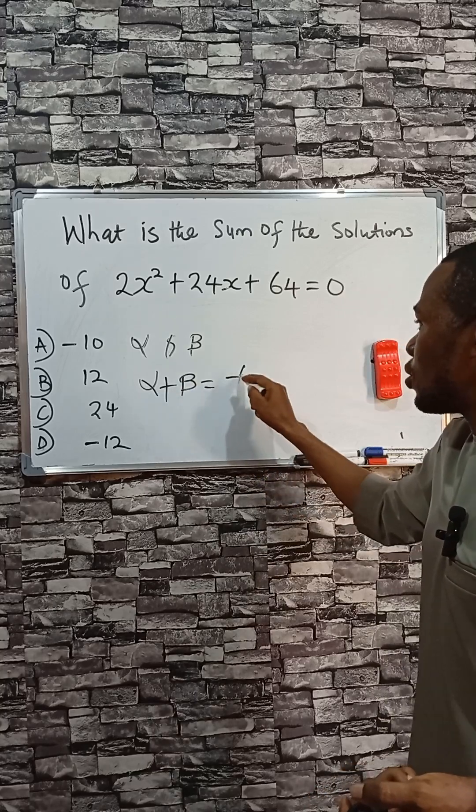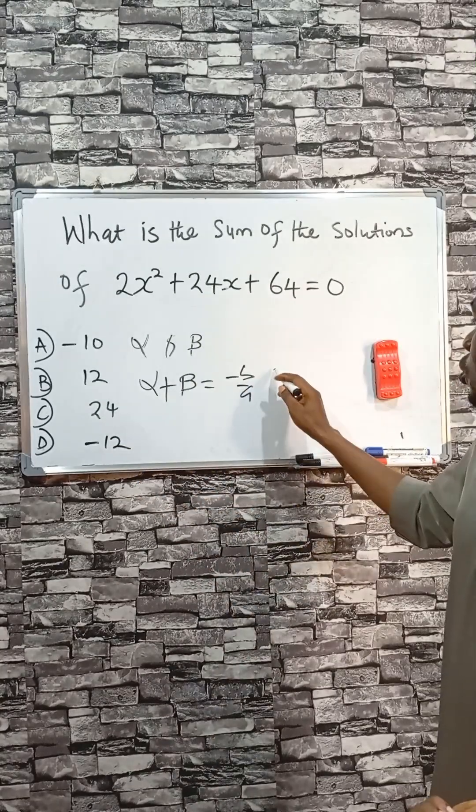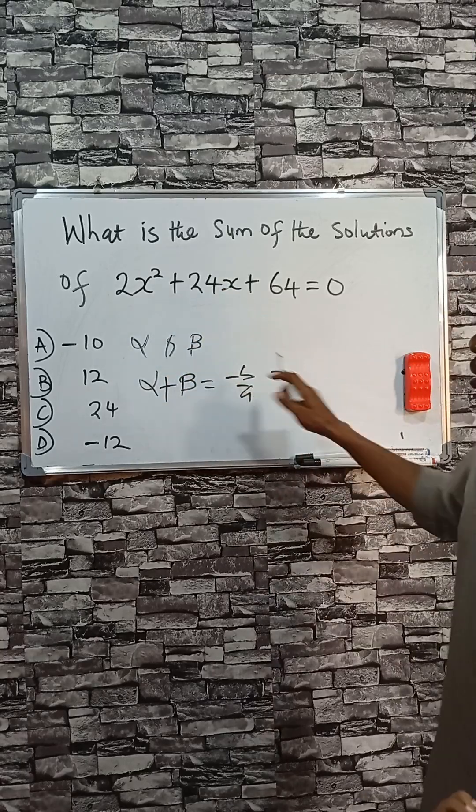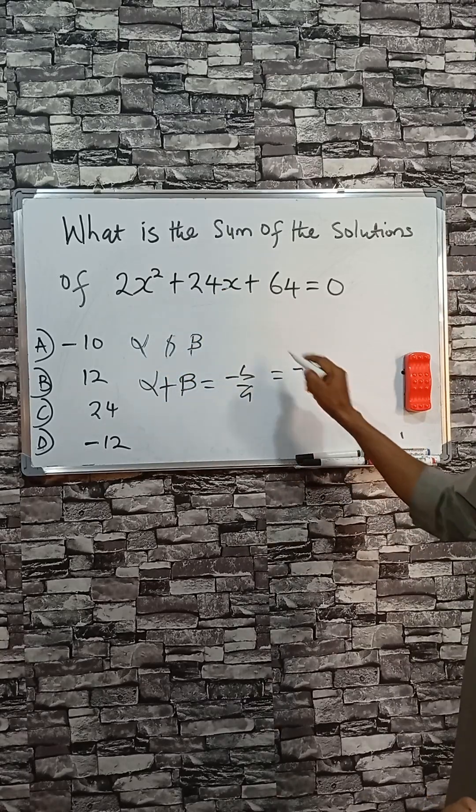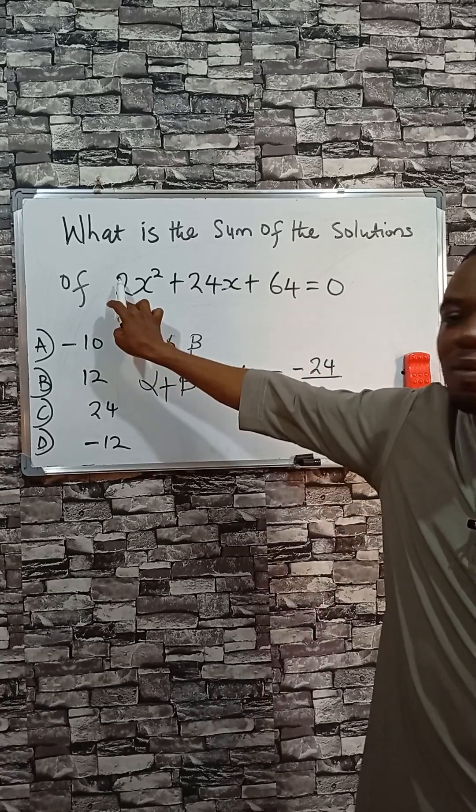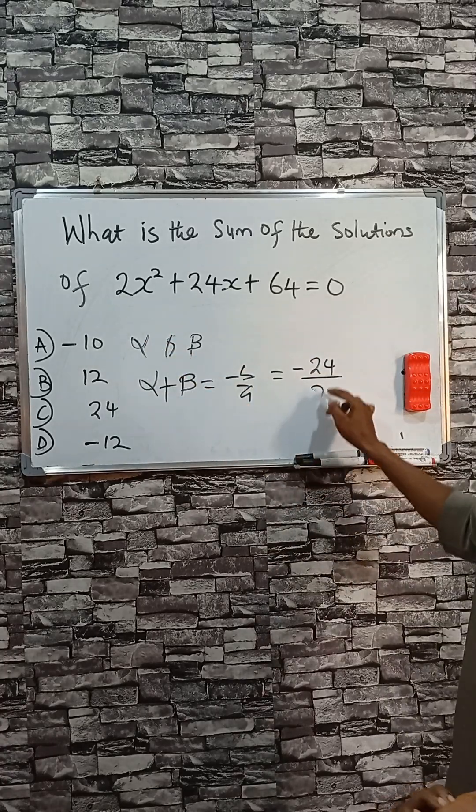It will give you minus b over a. That's been proven. So from here our b is the coefficient of x and it comes with minus, so minus 24 divided by a, a being the coefficient of x squared, that is 2.